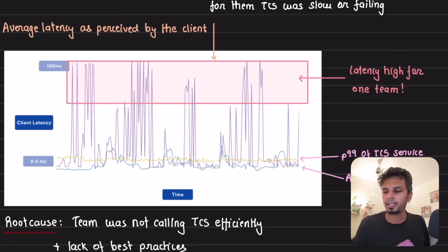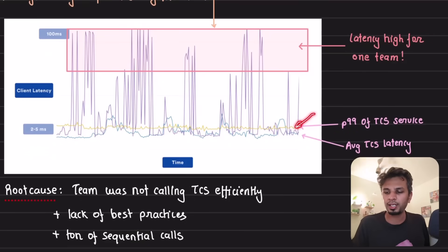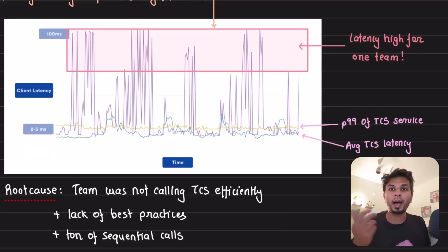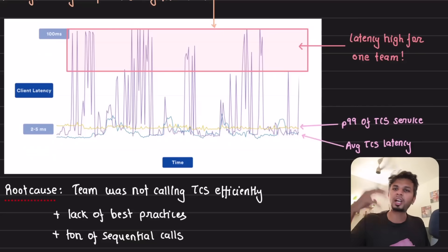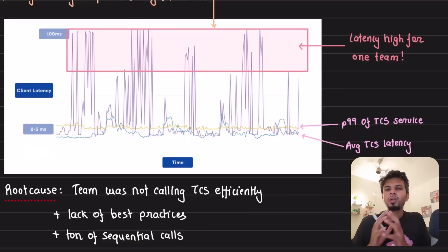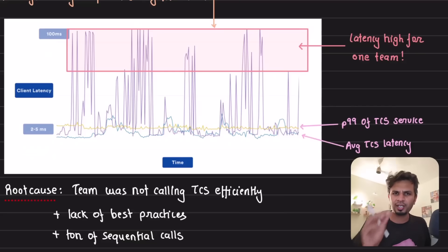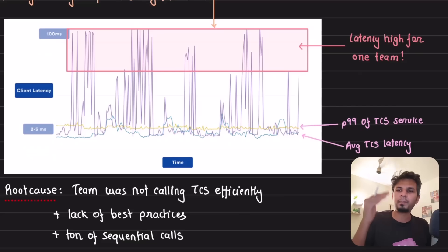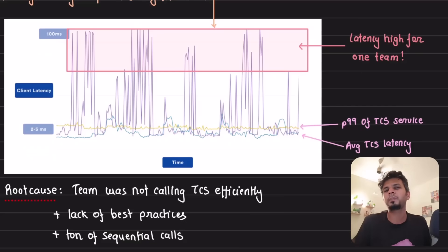The P99 of the TCS service itself is around single-digit milliseconds, and the average is even less. So why was a single team facing such high latencies and failure rates when no other team was? When they dug deeper, they realized this particular team was not using the TCS service efficiently. The client they wrote lacked a bunch of best practices — they made a lot of sequential calls that should have been done in parallel.